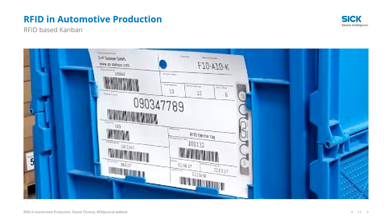It is mainly the tool that organizes the replenishment process. When a full box is delivered to the production line and the box gets emptied, an operator will take this Kanban card and use it to start a new replenishment process — for example, by posting a new order in the ERP system. This is a great process, established for decades and proven all over the world.